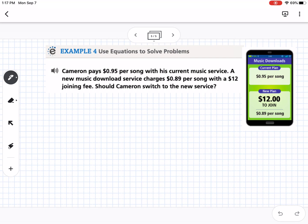Okay, so basically, we want to find out when are these two things going to be equal, his current plan and the new plan. So we know that his current plan is 95 cents per song. So we're going to put an x with that, and there's no joining fee with his current plan. Then the other plan is 89 cents per song. So we put that with an x plus the $12 to join.